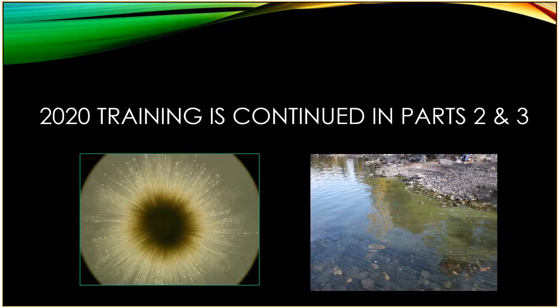And with that I will end training part one. Please continue on to parts two and three to learn more about how to use the visual assessment system and how to get your data into the Vermont cyanobacteria tracker.